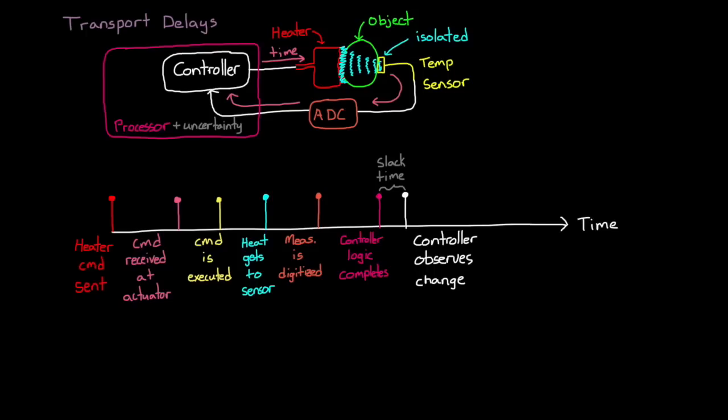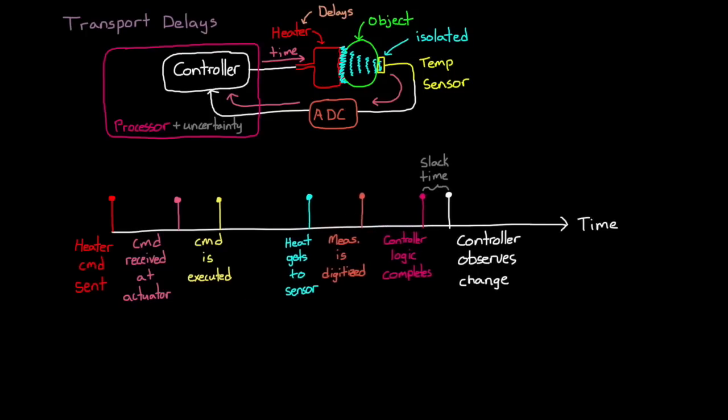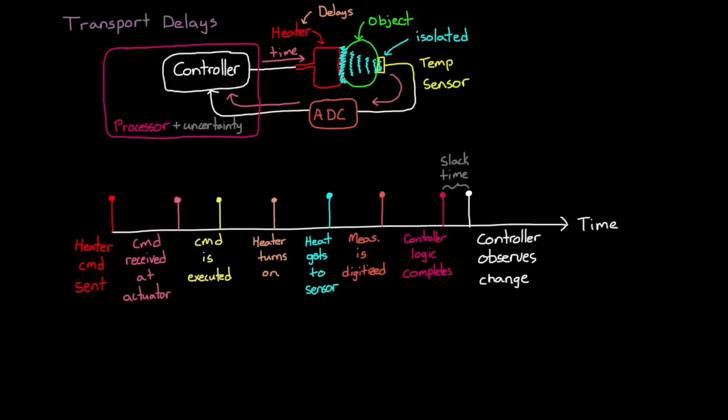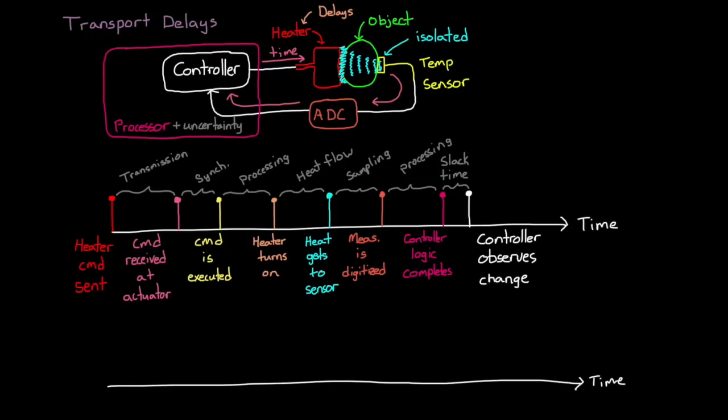Now, even after the command is issued within the actuator, transport delays in the actuators mean that there's even more time before the system actually starts changing. In our case, the heat starts flowing. So all of these delays—transmission, synchronization, processing, energy and mass movements, sampling, slack time, and more—when they're all combined, they create dead time between when a command is issued and when the controller processes the measured response.